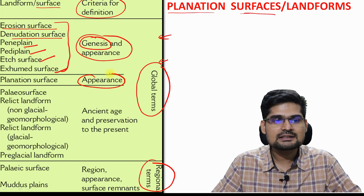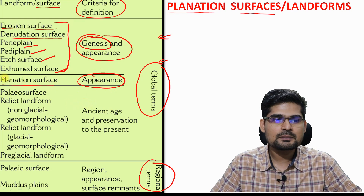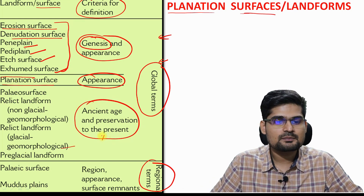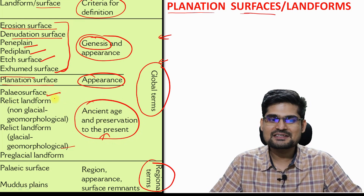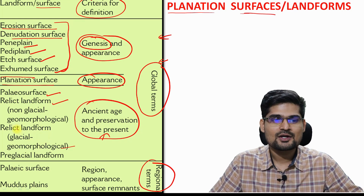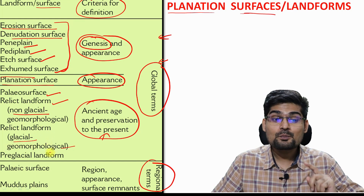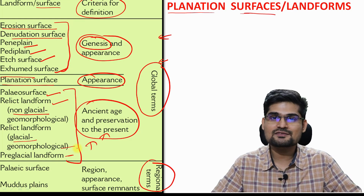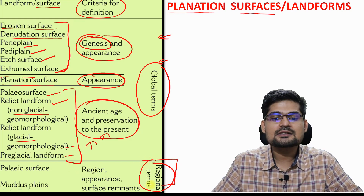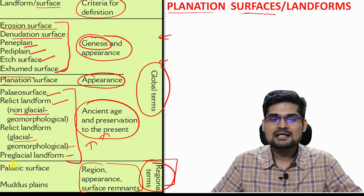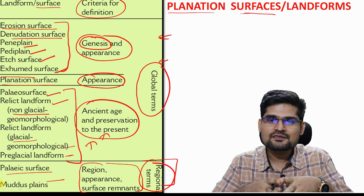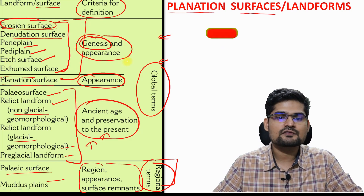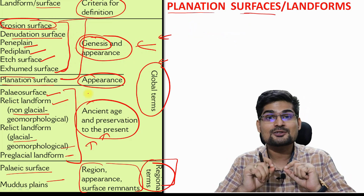In terms of ancient age and preservation to the present, the classification includes paleo surface, relic landforms — both non-glacial and glacial — and pre-glacial landforms. This is based on timeline, historicity, and preservation. In the regional connotation, we have regional appearance and surface remnants: paleo surface and modus planes. This is the overall classification of planation surfaces we are learning.